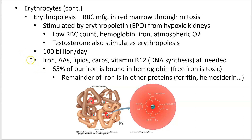What do we need for erythropoiesis? All of these things: iron obviously, amino acids to make the proteins, lipids to make the membranes, carbohydrates to make many components that go along with those membranes and proteins, and vitamin B12 for DNA synthesis. Even though mature red blood cells are anucleate bags of hemoglobin with no DNA, you're making a hundred billion cells that require DNA every day. If you don't have vitamin B12 you're unable to continually make that DNA, so a vitamin B12 deficiency can give you a type of anemia.